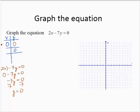So we found that if x is 0, then y is 0. Well, that means if y is 0, then x would also be 0. So these are in fact the same point. We need to figure out another point or two.